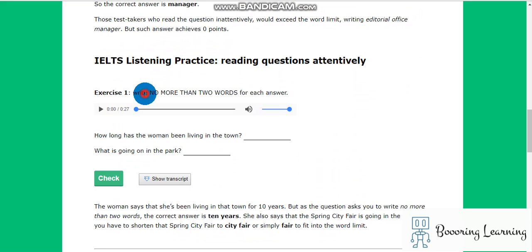Example: write no more than two words. It is such a good town. How long have you been living here? I like this place too. I've been living here for 10 years so far. It's not very big but it's so calm. Yes, and this town is very green too. There are parks and squares almost everywhere. And what is going on in that park over the road? It is a spring city fair. A lot of folk crafts are presented there.